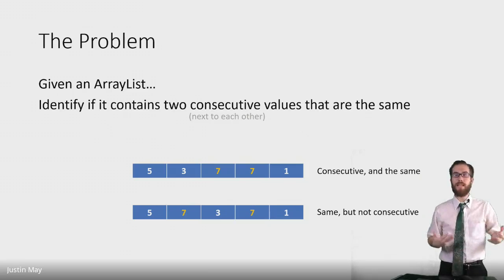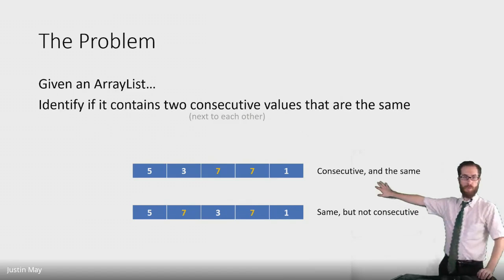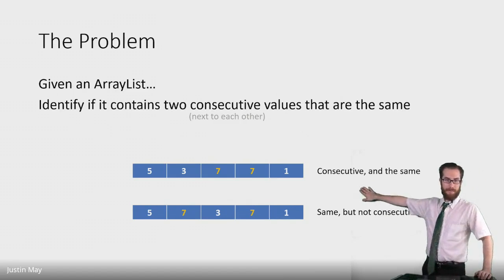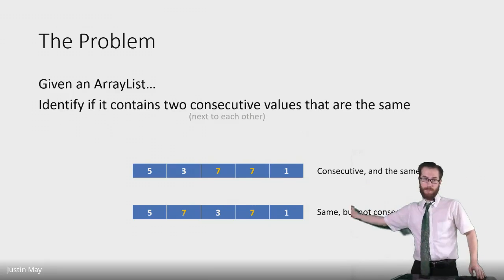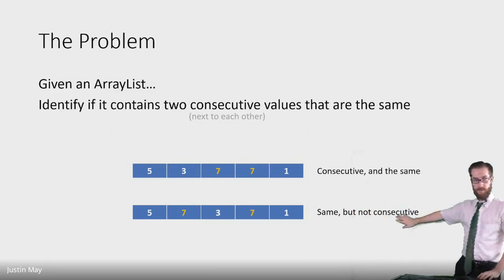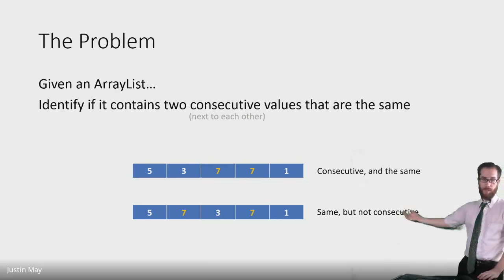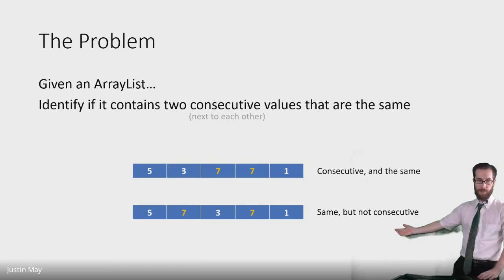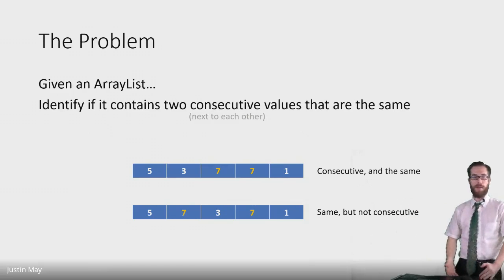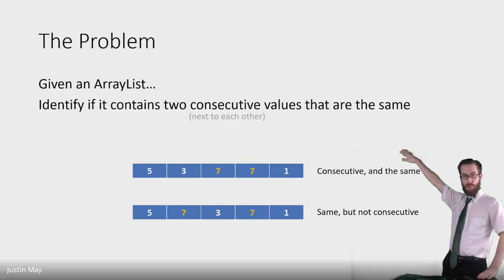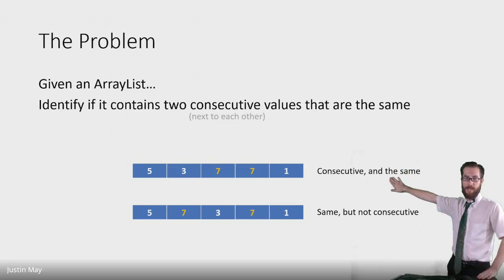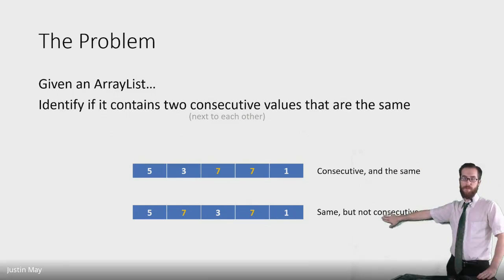Consecutive just means next to each other, one after the other. So in this example, I have two consecutive values that are the same — there's two sevens next to each other. In this other example, we have two values that are the same, there's two sevens, but they're not consecutive. So if the problem is to find two consecutive values, the first would be a true example and the second would be a false example.